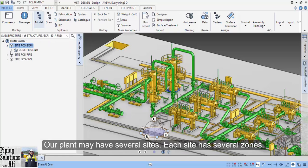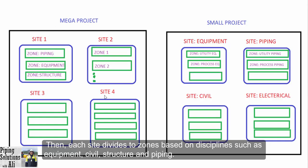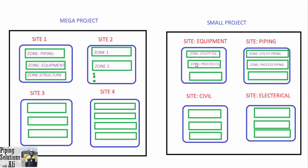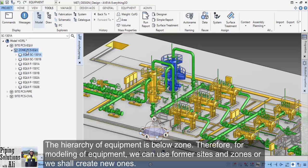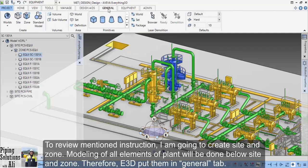Our plant may have several sites, and each site has several zones. If we have a mega project, we should divide it into several sites based on their coordinates. Then each site divides into zones based on disciplines such as equipment, civil, structure, and piping. If we have a small project, we can divide it into several sites based on disciplines and then create zones below sites. The hierarchy of equipment is below zone. Therefore, for modeling of equipment, we can use existing sites and zones or we shall create new ones.